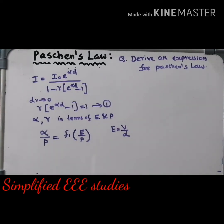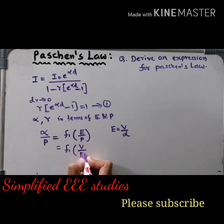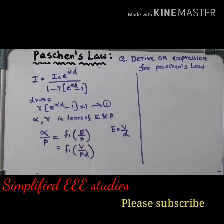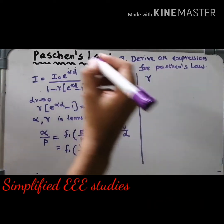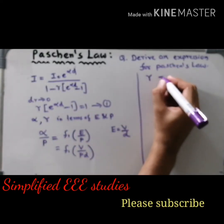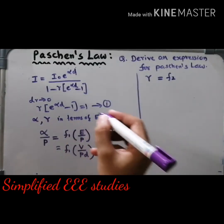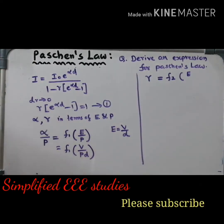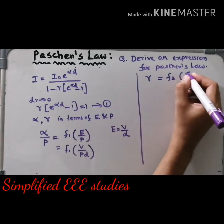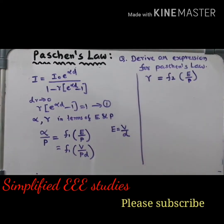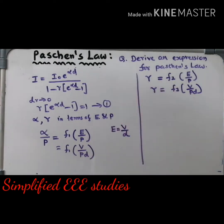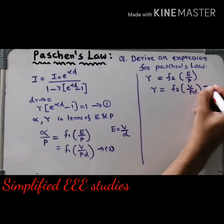In the same fashion, I am going to write the expression for Townsend's secondary ionization coefficient gamma. That means gamma equals f2 of (E/p), which we can rewrite as f2 of (V/p, d). Call the expression for alpha as equation number 2 and the expression for gamma as equation number 3.